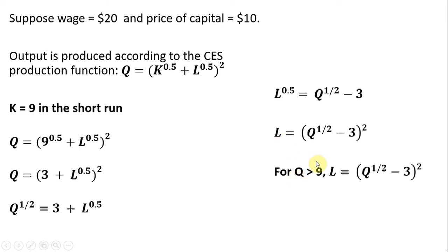And this will only hold true when Q is greater than 9. For example, if Q equals 9, 9 to the 1.5 power is 3 and L will equal 0.